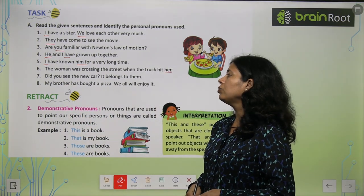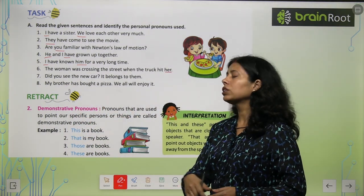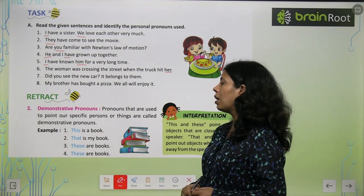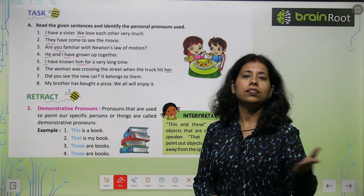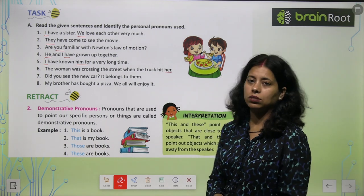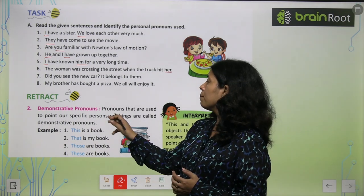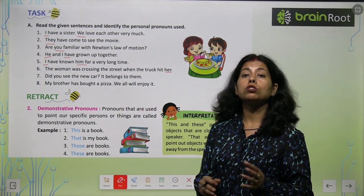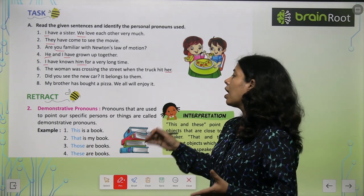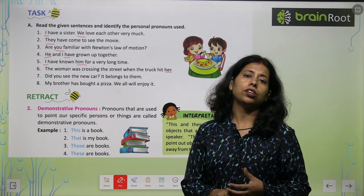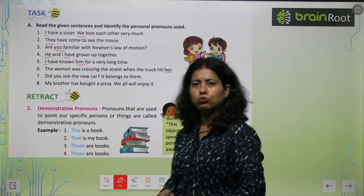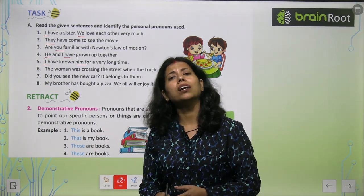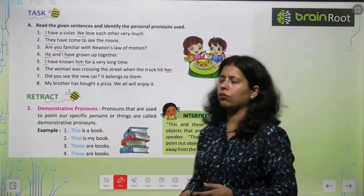So like this — I am leaving that for you to solve as homework. The second type of pronoun is the Demonstrative Pronoun, where we talk about this, that, these, those. Pronouns that are used to point out a specific person or thing are called Demonstrative Pronouns. When you are pointing out a particular thing, a demonstrative pronoun is used.